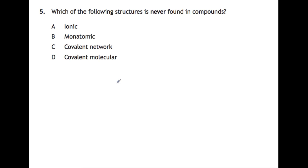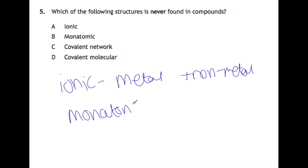Which of the following structures is never found in compounds? So for A, ionic, you need to have a metal and a non-metal, that can only be a compound. For a monatomic, that means that you're existing as one atom. You can't have a compound if you only have one atom, and this is for the noble gases, so B is your answer. A covalent network that could be a compound could be something like silicon dioxide, and covalent molecular substances like water are compounds.